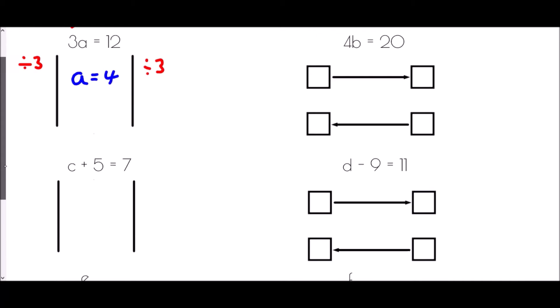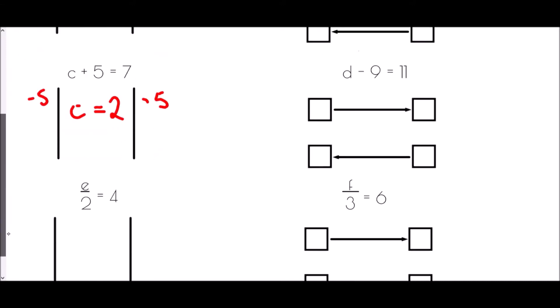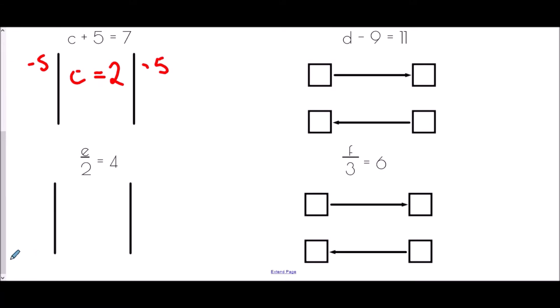The second balancing example is C plus 5 equals 7. C has 5 added on, so the inverse operation is to subtract 5. C plus 5 take away 5 leaves just C, and 7 take away 5 gives 2, so C equals 2. Finally, E divided by 2 equals 4. The fraction tells us E is being divided by 2, so the opposite operation is to multiply by 2 on both sides. E divided by 2 then multiplied by 2 leaves just E, and 4 times 2 is 8. This is the balancing method — doing the same thing to both sides.